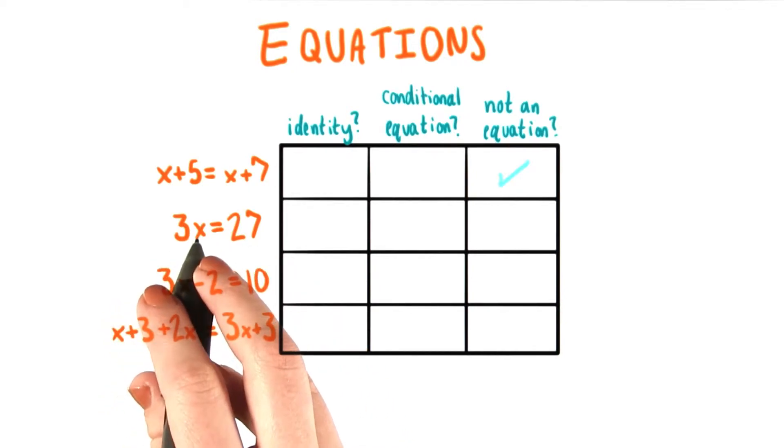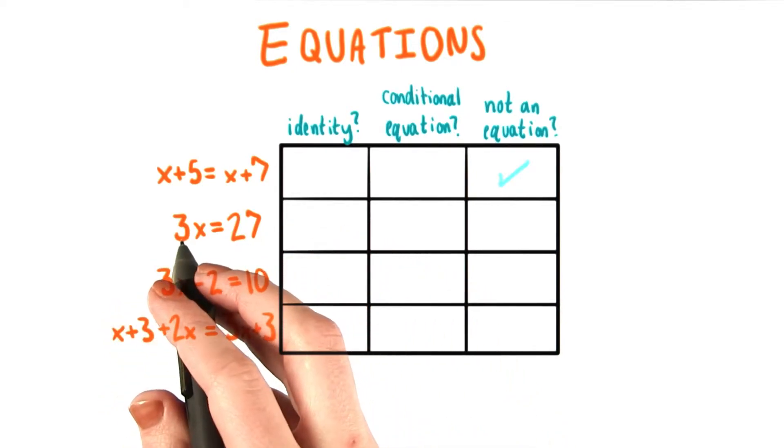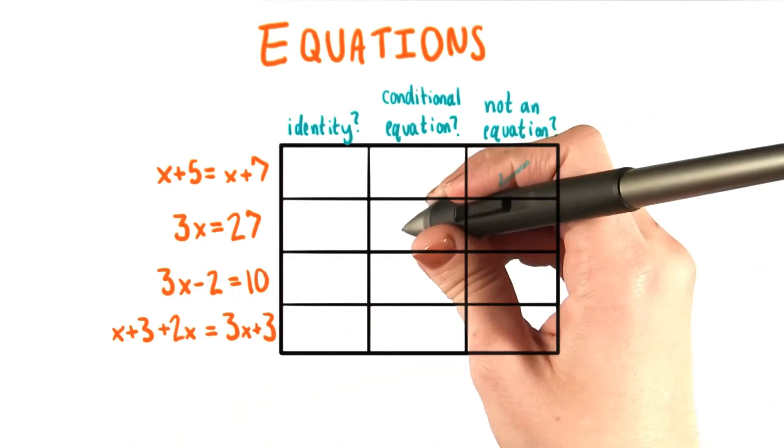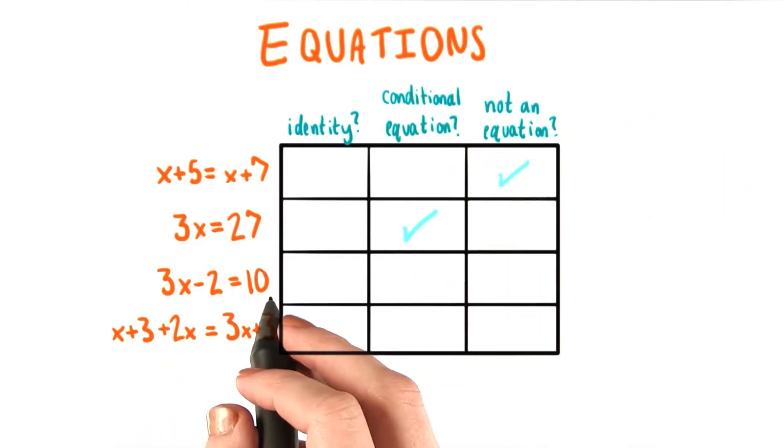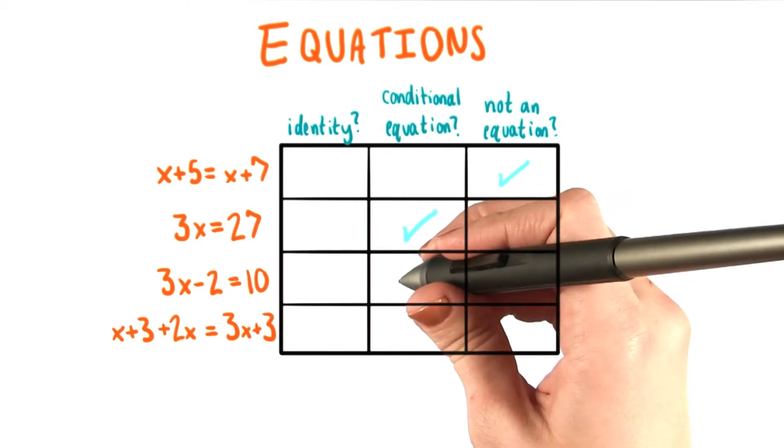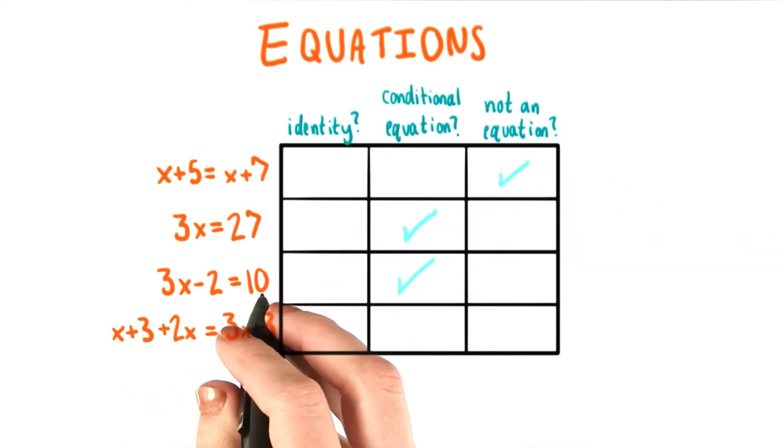However, other numbers that we could put in for x like 0 would not make this true. So this has to be a conditional equation. Our third equation is the same type as the second one, since some values of x make this true.